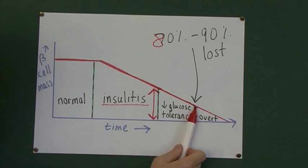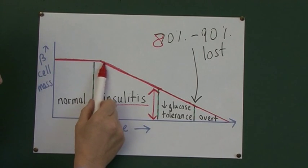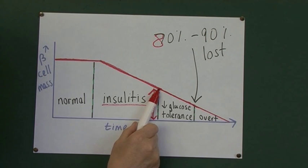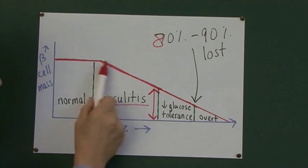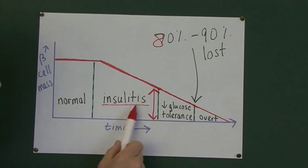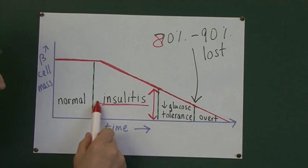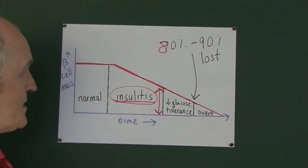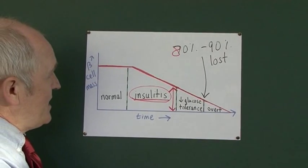So, they start off being normal. The beta cell mass goes down progressively over a period of, probably over a period of two, a couple of years to do this. It's not a quick process. This is going on for a year or two, or even more, inside the patient's pancreatic islets.